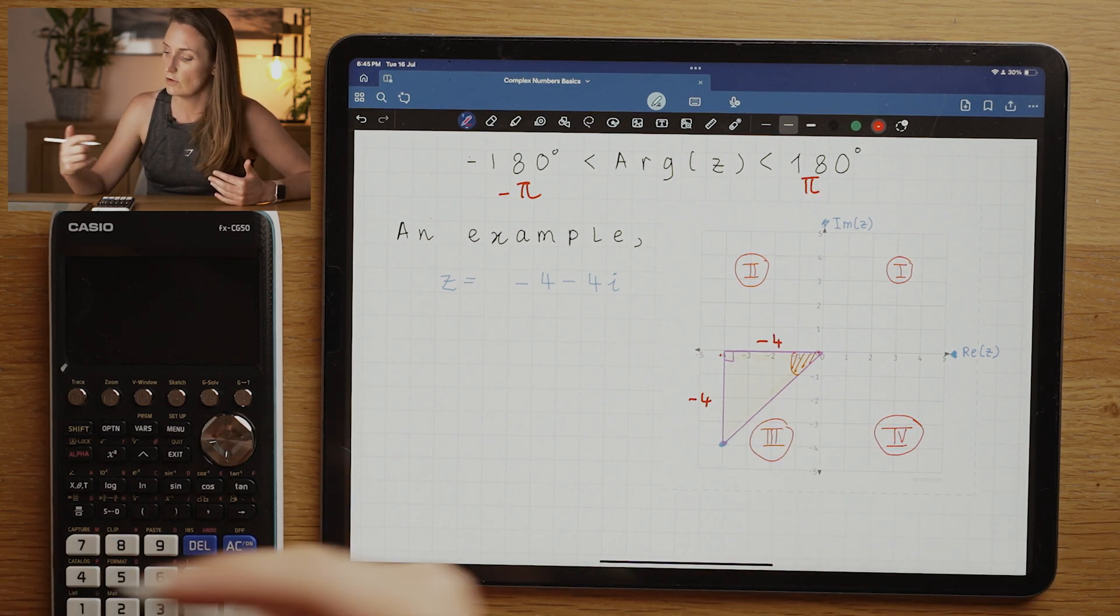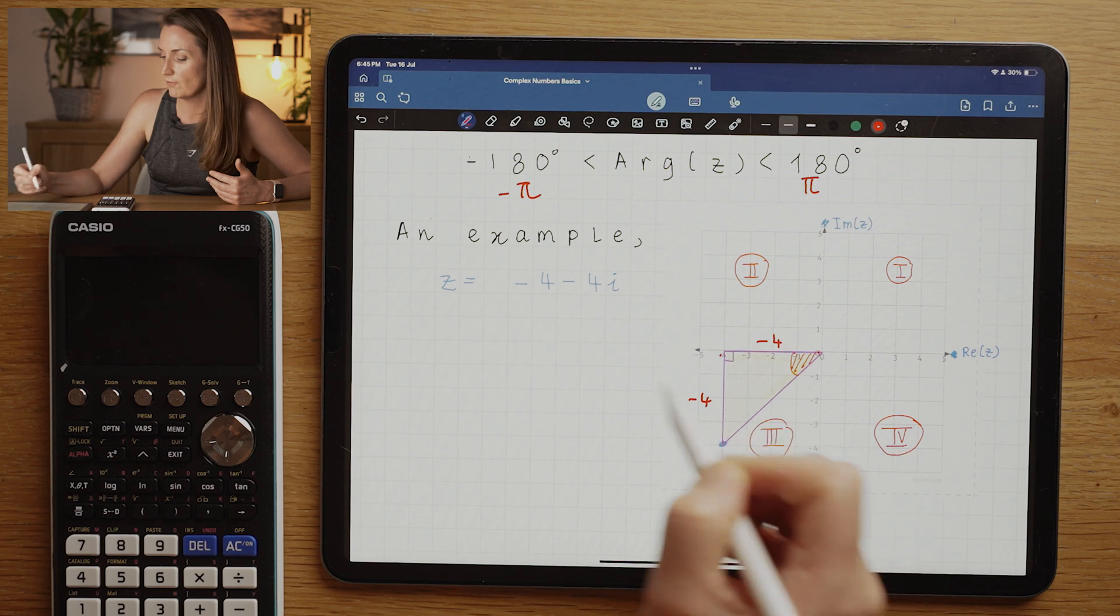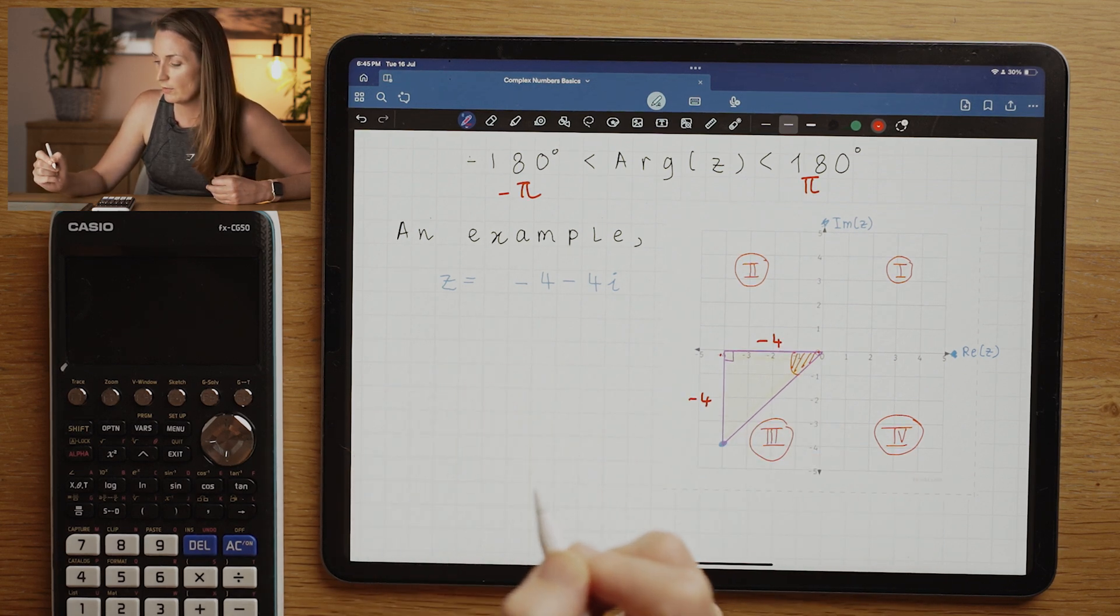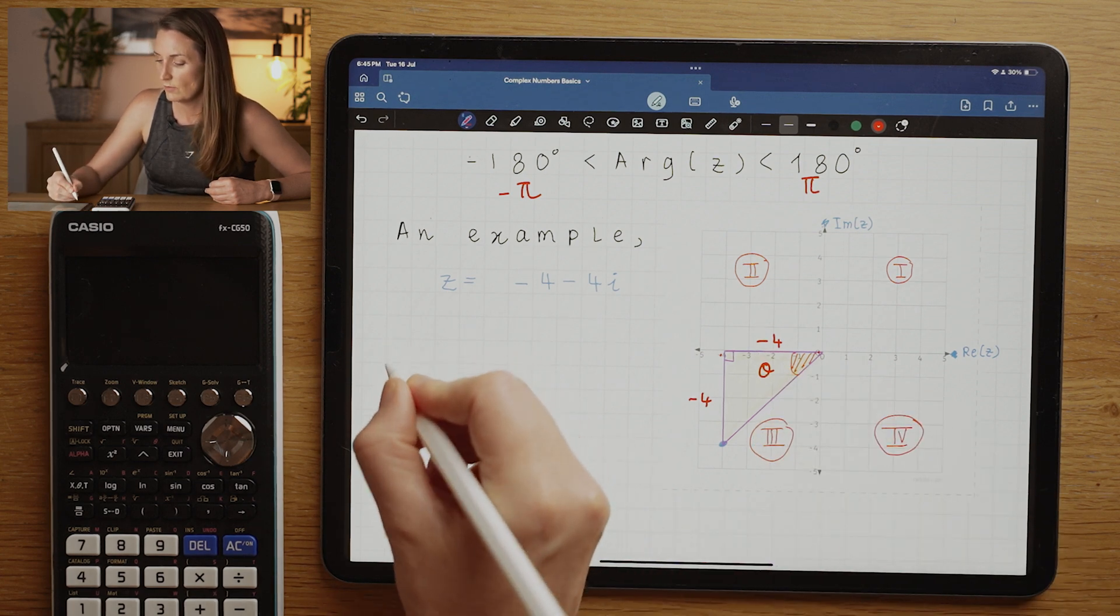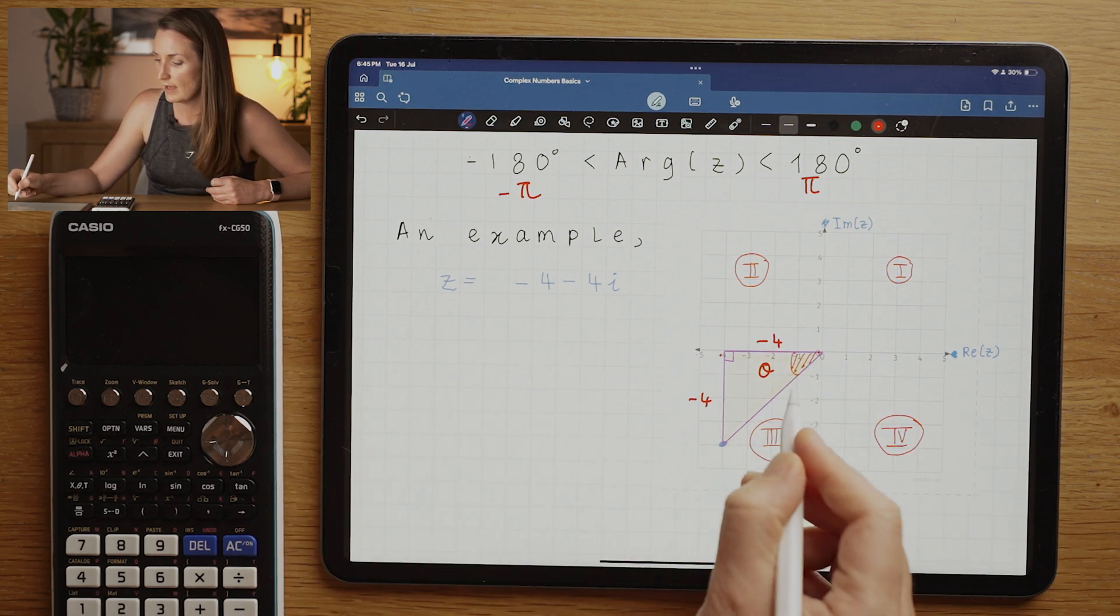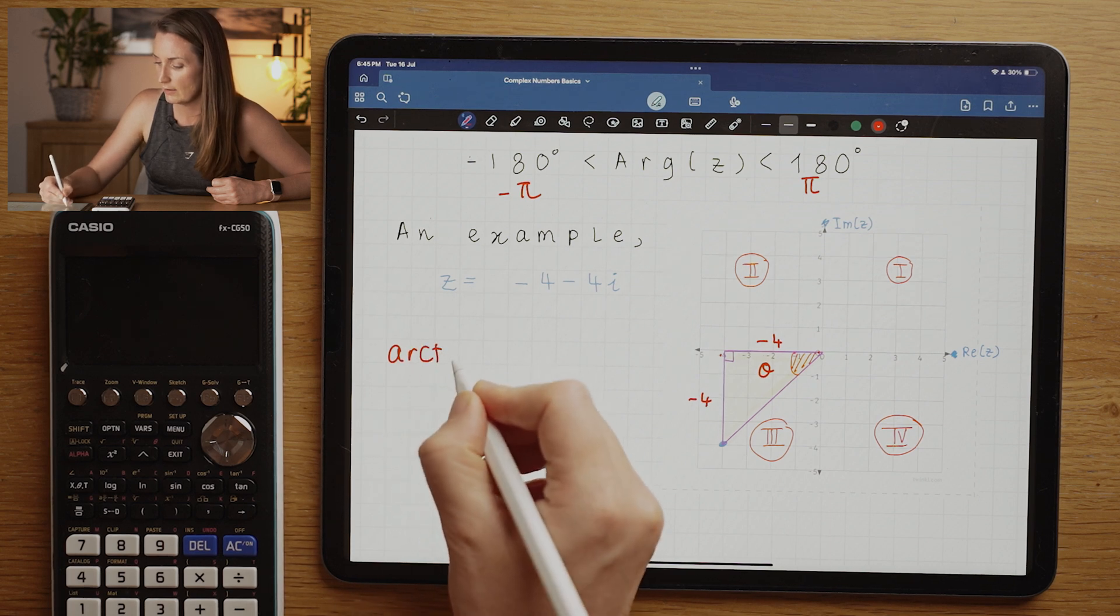We're going to start by saying that this distance here, well it's minus four minus four, but minus four is not actually a distance, so the length would be four and four. If I was to find out this angle here, let's call this theta.